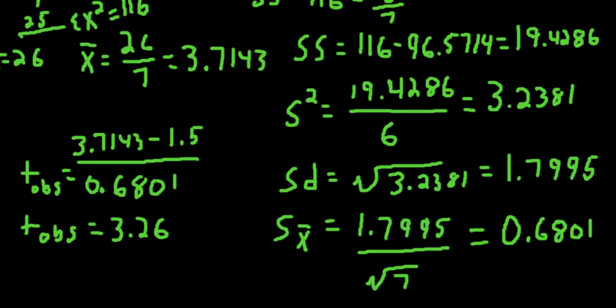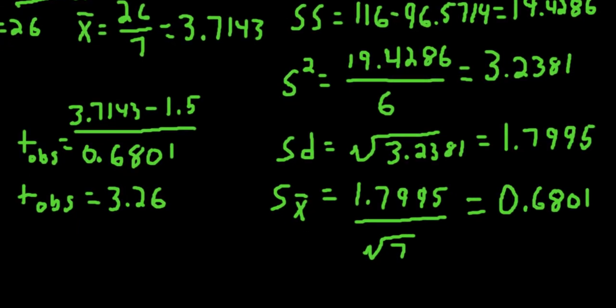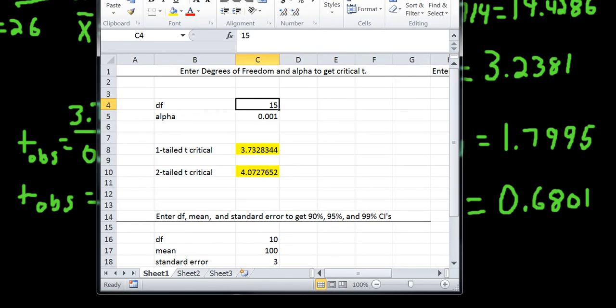So if we, let's say we were doing this as a one-tailed test with alpha 0.05, we predicted that the population that we took our sample from was going to have more text messages sent on average than the general population mean of 1.5. We would find out our t-critical value for our degrees of freedom here, which is n minus 1. So since n here is our sample size, is 7, n minus 1 would be 6, our alpha is 0.05, and a one-tailed t-critical value that we would need to achieve is 1.94.